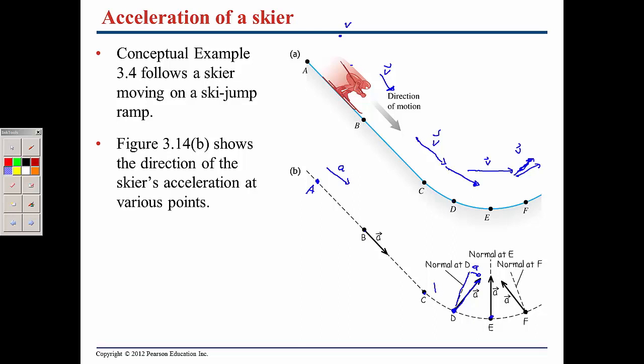At point E the velocity doesn't change in length, but it does in direction, so the acceleration is going to be normal to the direction of the velocity. The hill is still turning at point F, and now it's starting to slow him down because he is going uphill, so the acceleration vector is just a little bit to the left of the normal curve.